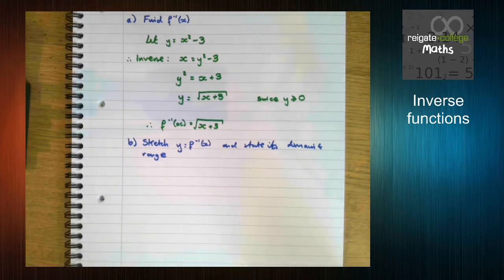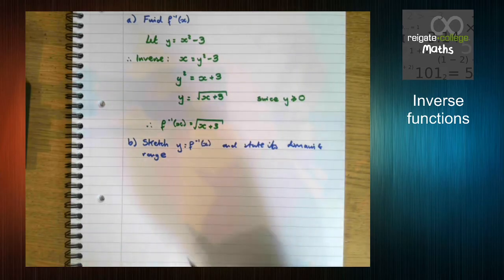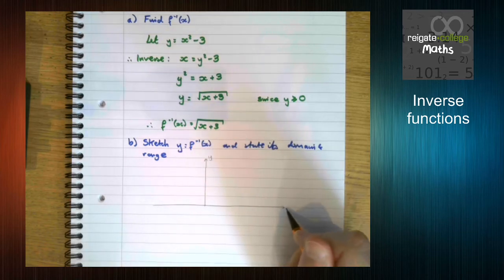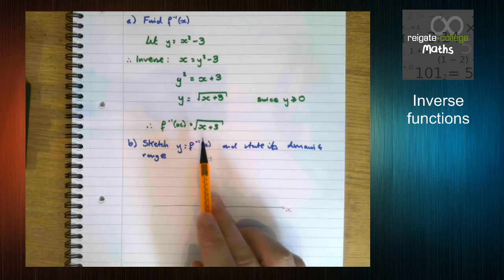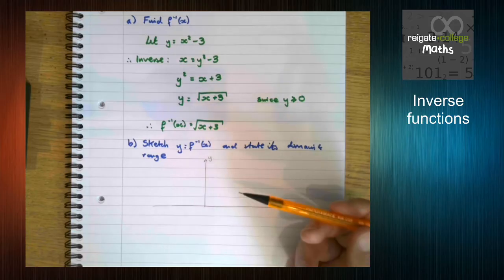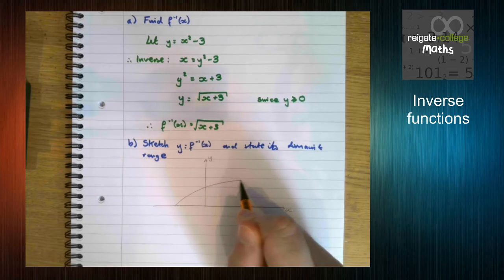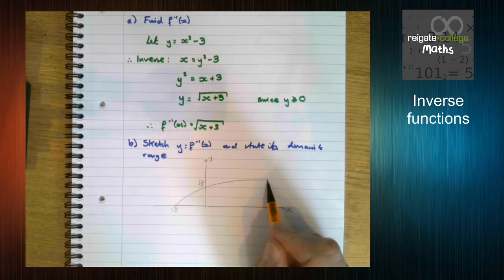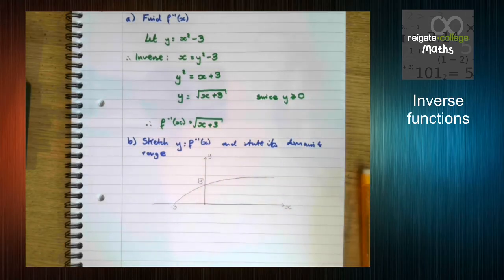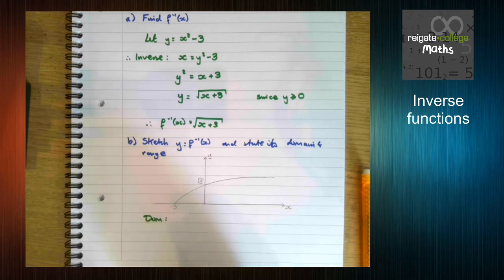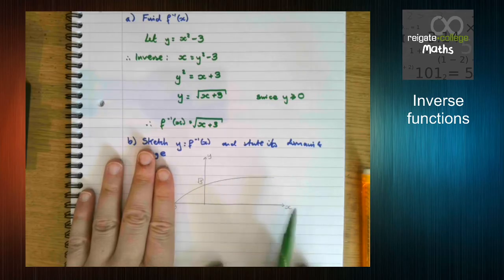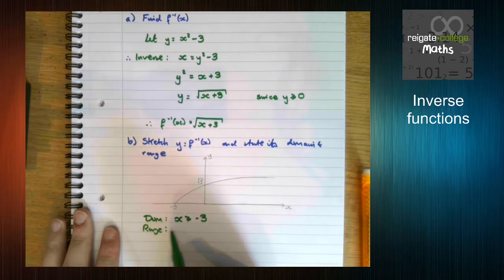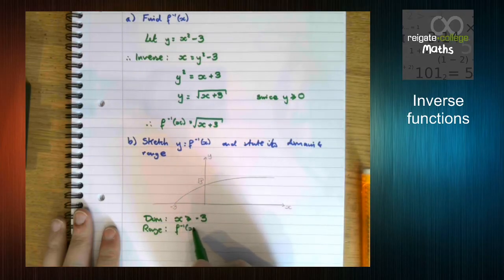If you know the graph of square root of x, this is actually a very straightforward question. We can think of this as a transformation — a shift of minus 3 in the x direction — so it's going to move the y equals square root of x graph three units to the left, giving something that vaguely looks like this. Stating its domain and range: we can see the lowest value in the x direction is minus 3, so the domain is x greater than or equal to minus 3. The range — f inverse of x — is greater than or equal to 0.